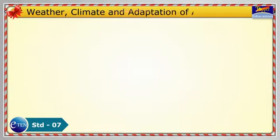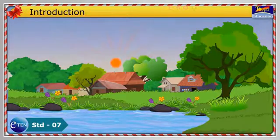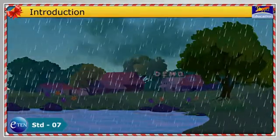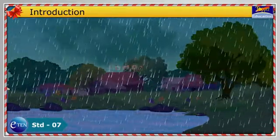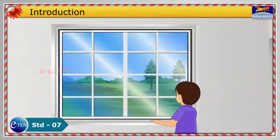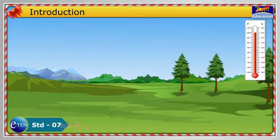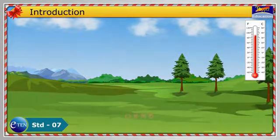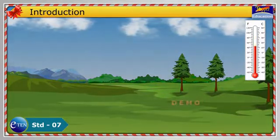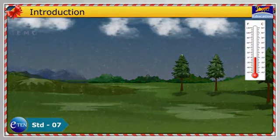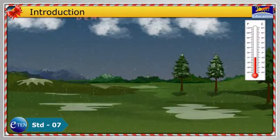Weather, Climate and Adaptation of Animals. Think about it this way: climate is what you expect, weather is what you get. Weather is what you see outside on any particular day. So, for example, it may be 40 degree Celsius and sunny, or it could be minus 10 degree Celsius with heavy snow. That's weather.